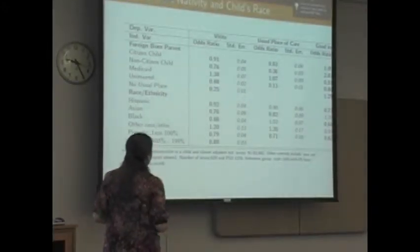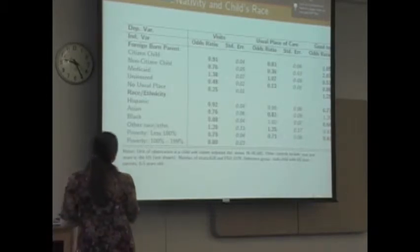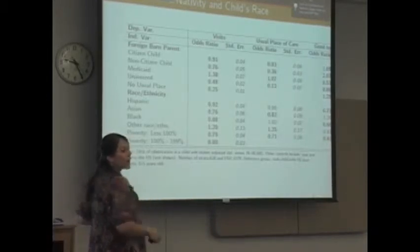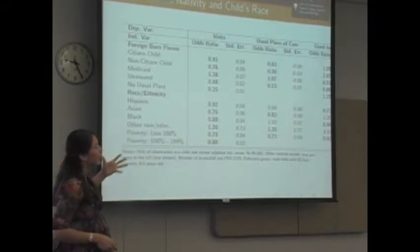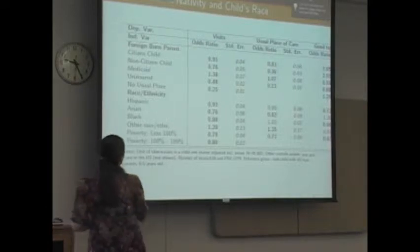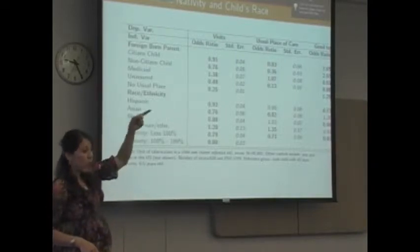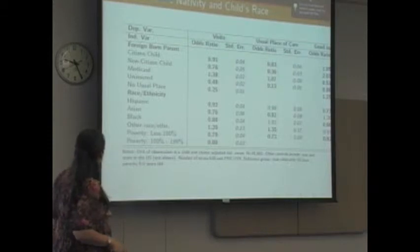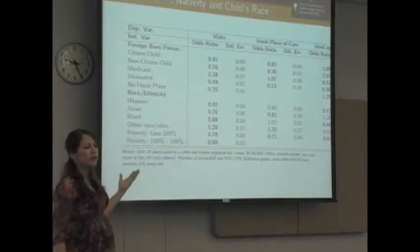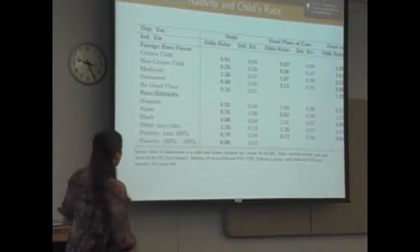A non-citizen child has a worse outcome of 0.76. Obviously we can see that being uninsured also has a negative impact. Then we see all the race groups — the baseline group is white — so comparing to white, Hispanic, Asian, and Black are also worse off.